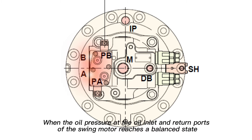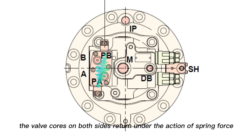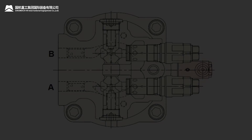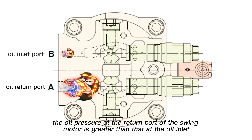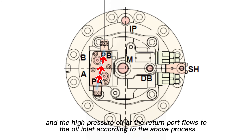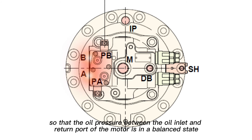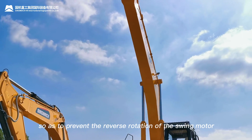This continues until the valve core cuts off the bypass oil circuit. When the oil pressure at the oil inlet and the return port of the swing motor reaches a balanced state, the valve cores on both sides return under the action of the spring force. At the moment when the excavator stops rotating, high pressure oil at the return port flows to the oil inlet according to the above process, so that the oil pressure between the oil inlet and the return port of the motor is in a balanced state, so as to prevent the reverse rotation of the swing motor.